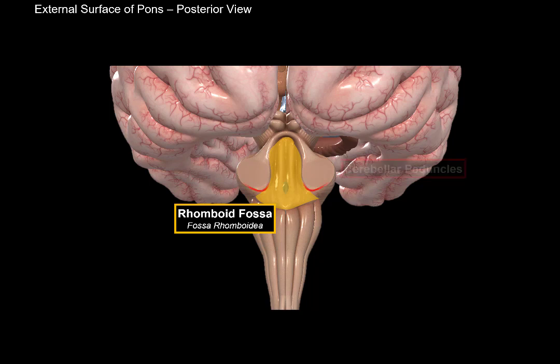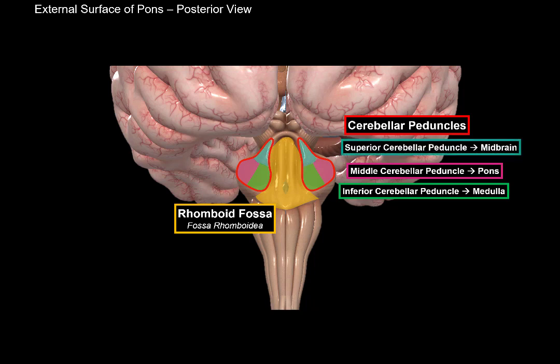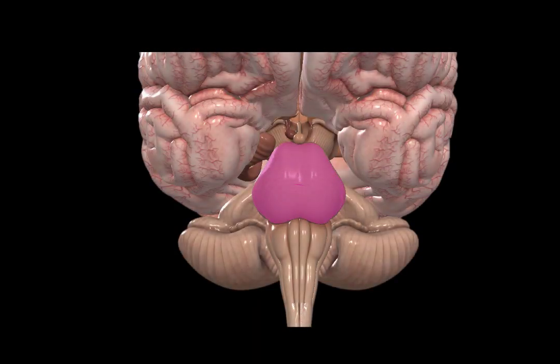On either side of the rhomboid fossa, you'll see the cerebellar peduncles, which contain fibers running between the cerebellum and all three parts of the brainstem. The inferior cerebellar peduncles contain fibers going to the medulla, the middle cerebellar peduncles contain fibers going to pons, and the superior cerebellar peduncles contain fibers going to the midbrain.